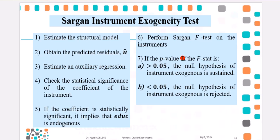You can proceed to perform a Sargan F-test on the instruments. Check out the p-value of the F-statistic. If it is above 0.05, the null hypothesis of instrument's exogeneity is sustained. Otherwise, we reject that null hypothesis. So, let us proceed to Stata to perform the Sargan instrument's exogeneity test.